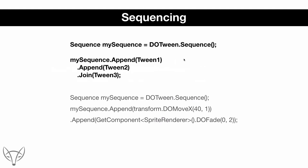There is a way to combine simple animations into more complex ones — that is done with sequencing. You declare a sequence, and then you append animations or join animations. Append means to run animations in sequence, while join means to run them in parallel. For example, you declare a sequence, append a move animation, then append a fade animation — so the move runs first, and after it is done the fade runs.